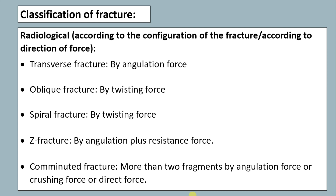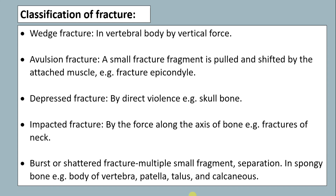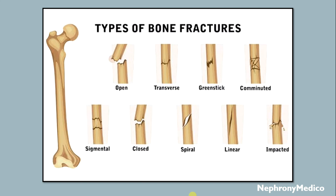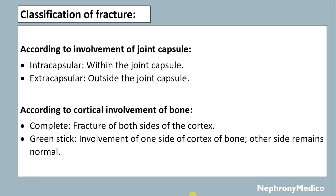Radiologically, according to the configuration of the fracture or direction of force transfer: fracture by angulation force, oblique fracture, spiral fracture, transverse fracture, comminuted fracture, wedge fracture, avulsion fracture, depressed fracture, impacted fracture, and burst or scattered fracture. This picture shows different types: open, transverse, greenstick, comminuted, segmental, closed, spiral, linear, and impacted fractures.